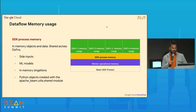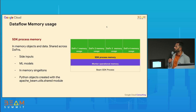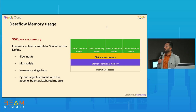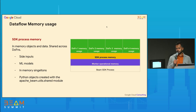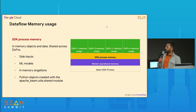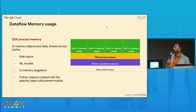The next category is what we call SDK process memory. This is the memory consumed by in-memory objects and data. These objects and data are shared across DoFns within the same SDK process. In this diagram, the yellow portion of the memory is accessible to a bunch of DoFns that are running concurrently.